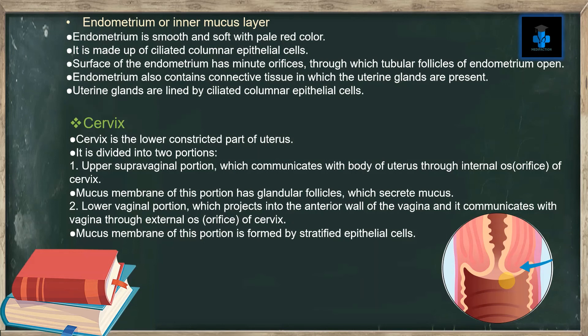The second division is the lower vaginal portion, which projects into the anterior wall of the vagina and communicates with the vagina through the external os or orifice of the cervix. The mucous membrane of this portion is formed by stratified epithelial cells.